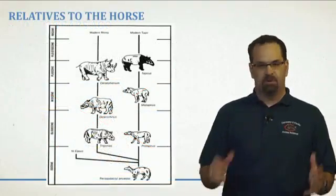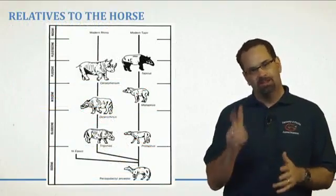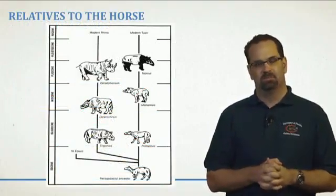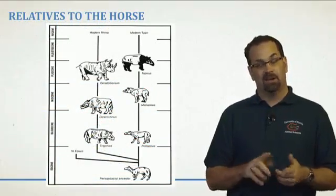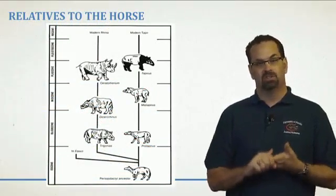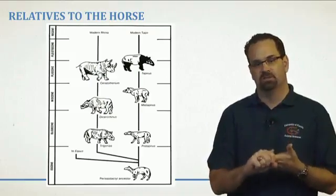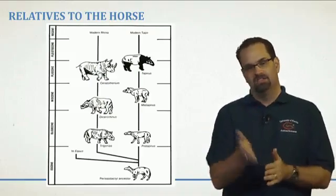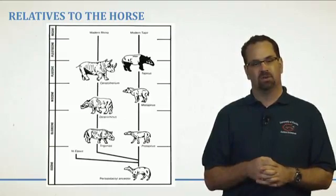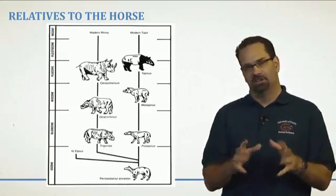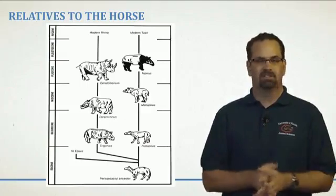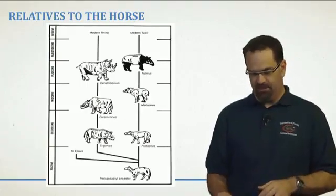The final slide of this presentation covers the two closest relatives of horses, which surprises a lot of people — it's pretty neat. Those are the rhinoceros and the tapir. Those are the horse's two closest relatives, and we can actually trace them back to that early common ancestor shown on the slide.